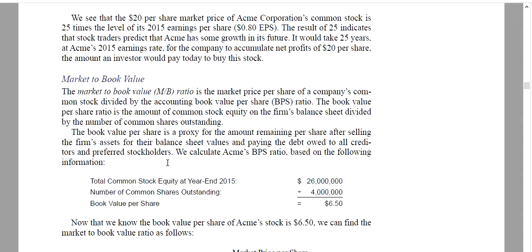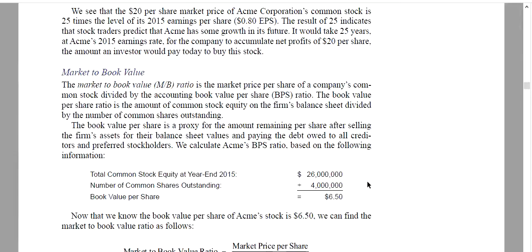You calculate that by taking the total common stock equity and dividing by the number of common shares outstanding. That's going to give us the book value per share.